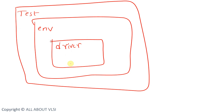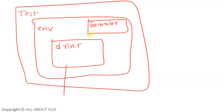So this is my driver, and here I have a generator also — so I have my driver as well as generator. These are connected with my mailbox, so basically the driver is connected with my DUT and it is driving some stimulus to the DUT. In this particular example I don't care about the DUT; my requirement is different.